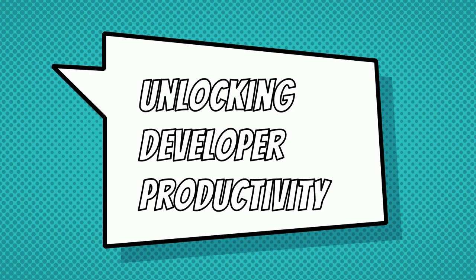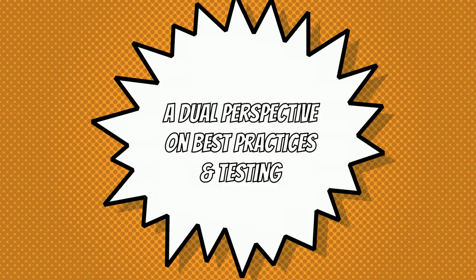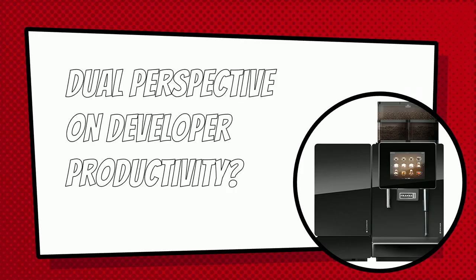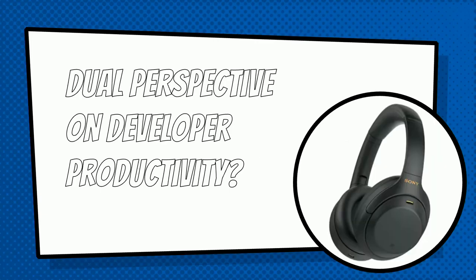We're going to talk about developer productivity. It has a strange name, obviously suggested by ChatGPT — it's not that we write our own abstracts anymore. It's a dual perspective on best practices and testing. You might wonder what that means — maybe it's coffee machines and noise-cancelling headphones? But today we're going to talk about the engineering aspect of developer productivity.